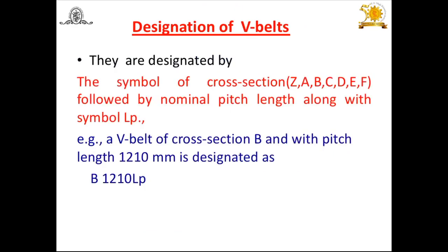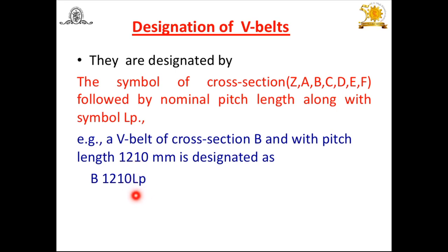Finally, designate the belt. A V-belt is designated by the cross-section followed by the nominal pitch length and the symbol 'Lp'. For example, if the cross-section is B and the pitch length is 1210 mm, the designation is B 1210 Lp. Using these steps, belts can be selected from the manufacturer's catalog in a standardized way.